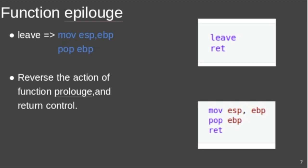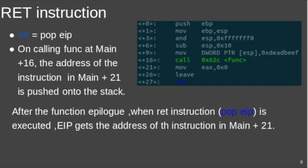Consider this simple assembly code. In this code, a stack frame of size 0x10 is created initially for the main, and it's done by calling the instruction in main plus 16. When the function is called, the address of the next instruction—that is, move EAX comma 0x0 in main plus 21—is pushed onto the stack.